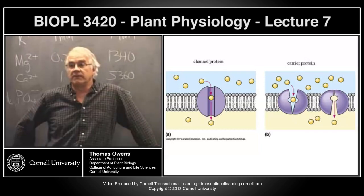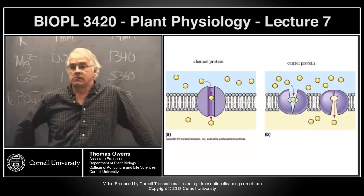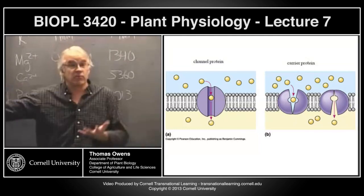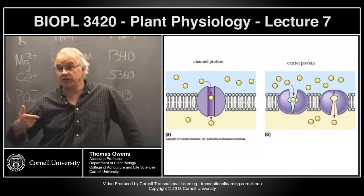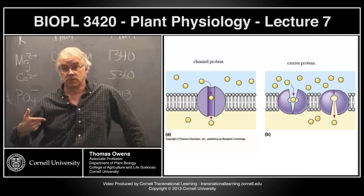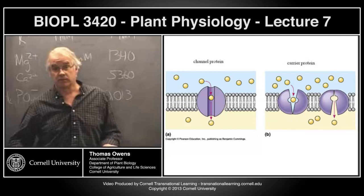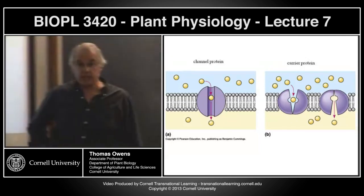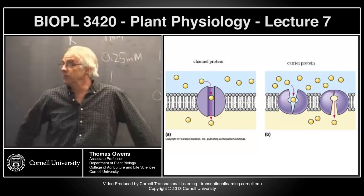Where does the energy come from for a carrier protein? The free energy associated with the electrochemical gradient of whatever is going across the membrane. There's always an activation energy barrier, and that must come from thermal energy in the environment. Don't treat this any differently than an enzyme — it is an enzyme. It just isn't making and breaking bonds; it's moving things from one side of the membrane to the other.